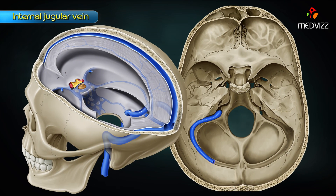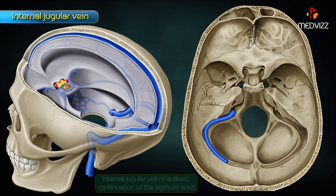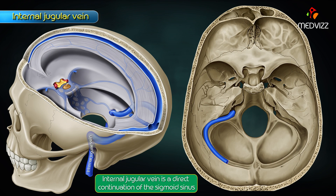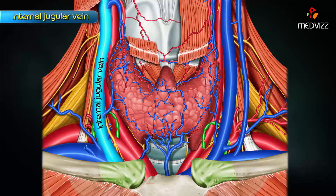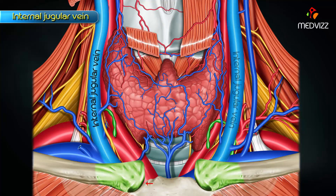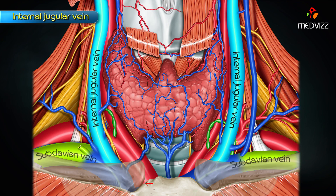The internal jugular vein is a direct continuation of the sigmoid sinus. It begins in the jugular foramen and ends behind the sternal end of the clavicle by joining with the subclavian vein to form the brachiocephalic vein.